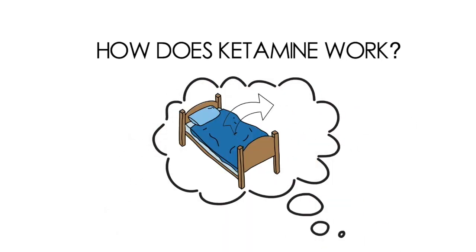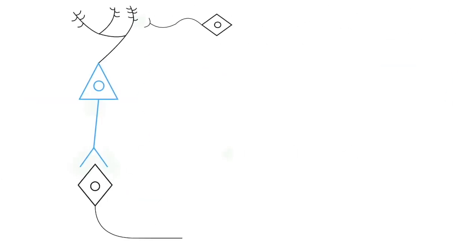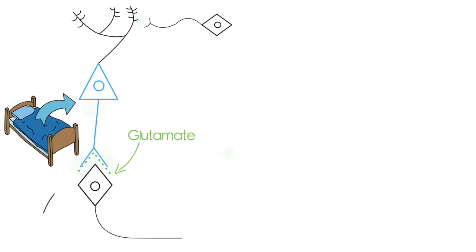Imagine that this is a getting out of bed neuron, so it works by releasing little packets of glutamate in the synapse here, which excites the next neuron.